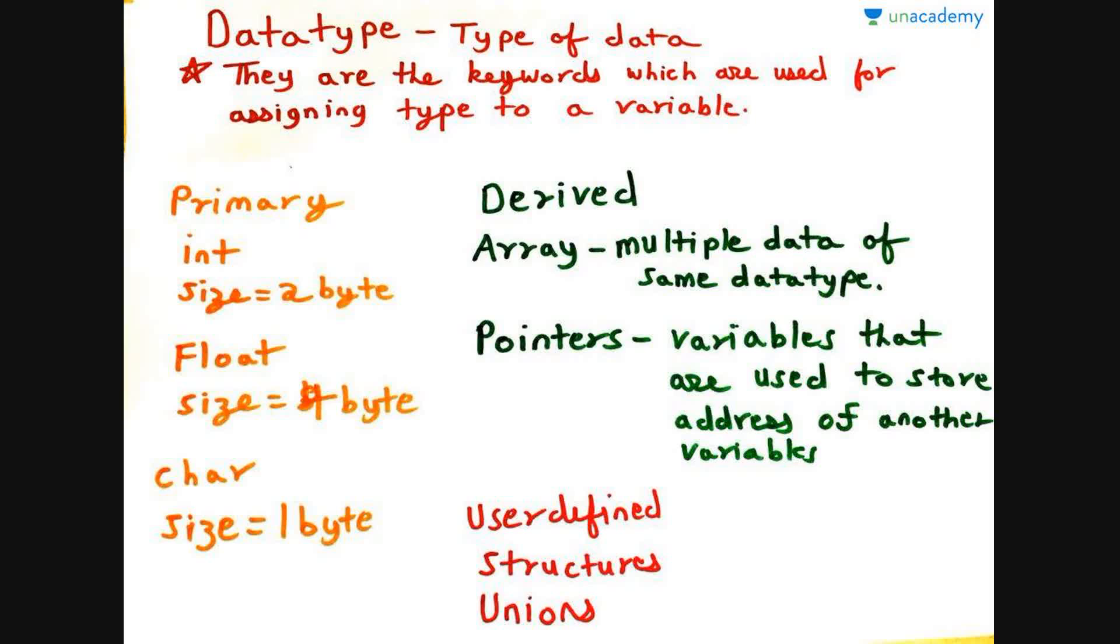The primary data types are int, float, and char. As I said earlier, int is used to store integers, float is used to store decimals, and char is used for characters. Now, each data type has its size. For int, it is 2 bytes, for float it is 4 bytes, and for char it's 1 byte.